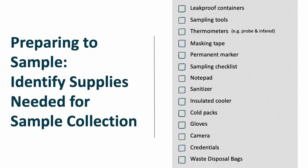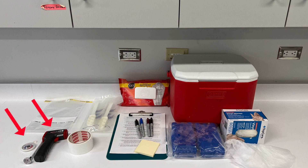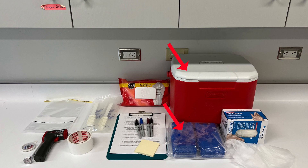After determining what products you will be sampling, you will need to select the proper supplies. Follow this checklist for the usual tools needed to collect a sample. Supplies you may need include a Whirl-Pak bag and sterile sampling tools, a probe and infrared thermometer, tape, permanent markers, a sampling checklist, a notepad, sanitizing wipes, a cooler of proper size to fit your samples with ice packs, and gloves and a hair net.